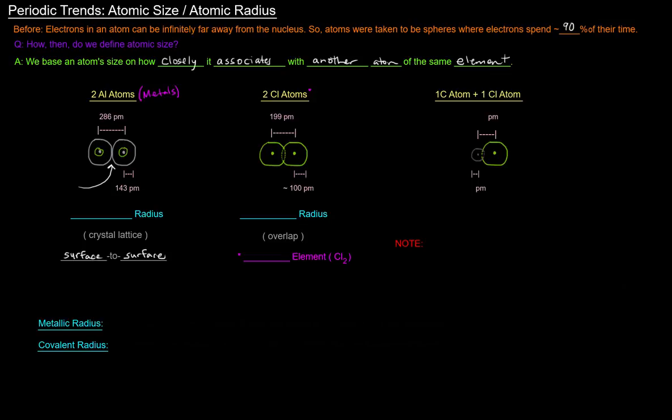And in this case for aluminum, the distance is actually 286 picometers. And so what we do with that distance is we take half of it, because half of it would be the distance from here to here, right? And so that is the radius of this atom. And in this case it would just be 286 divided by 2, which is 143 picometers.